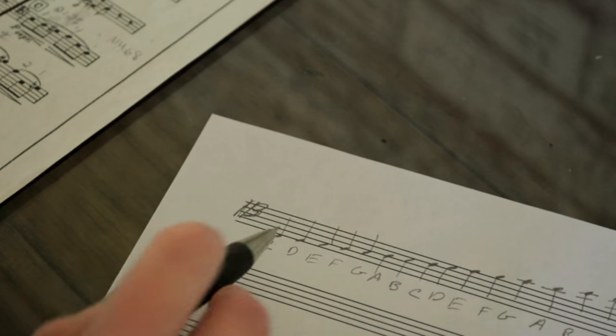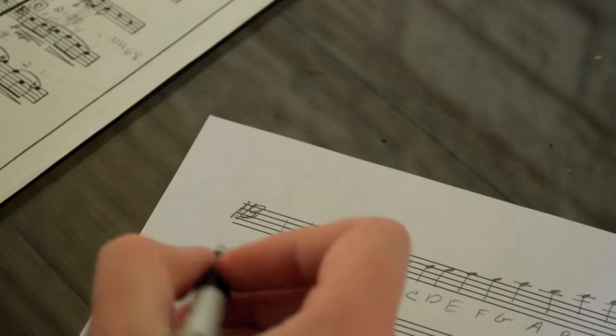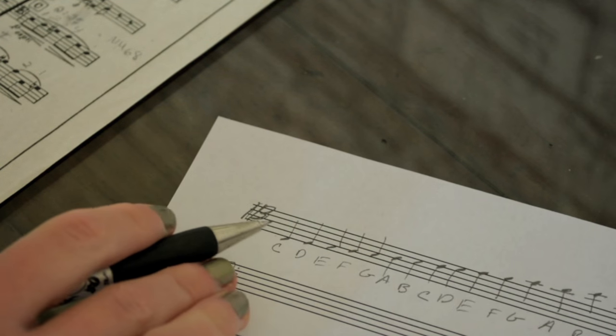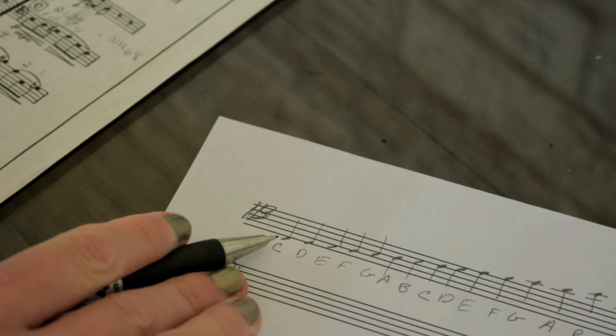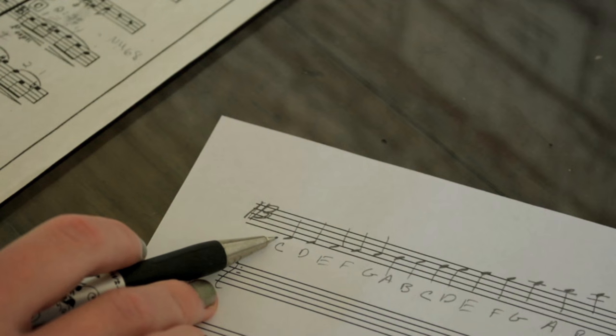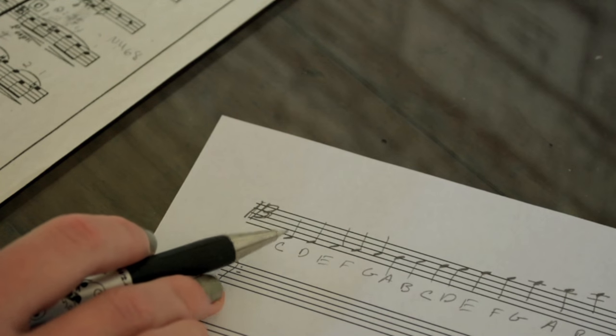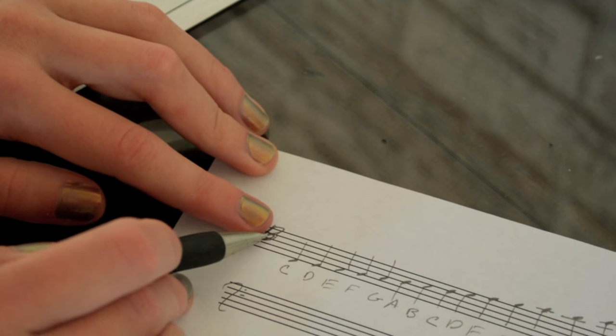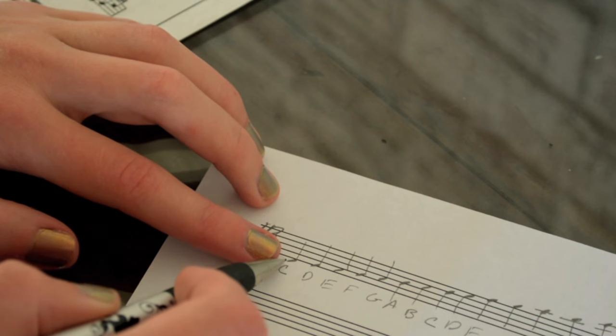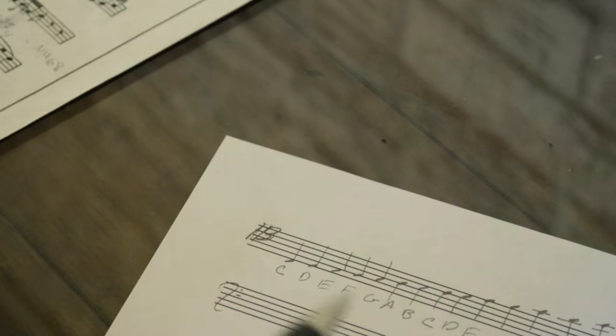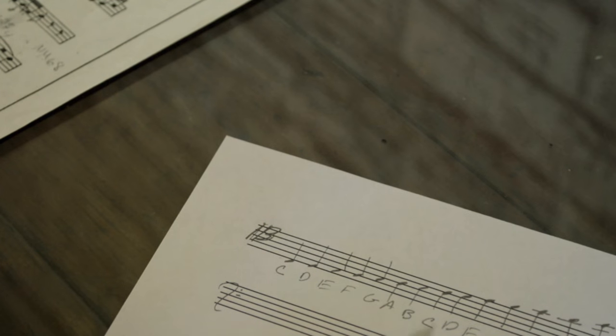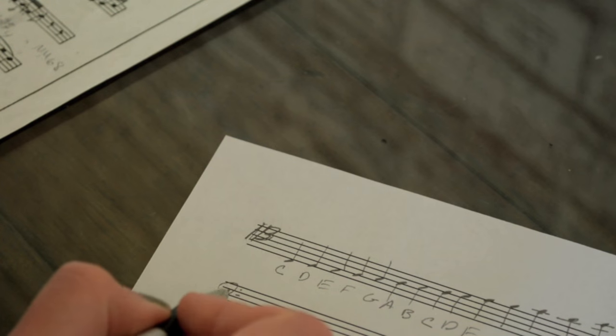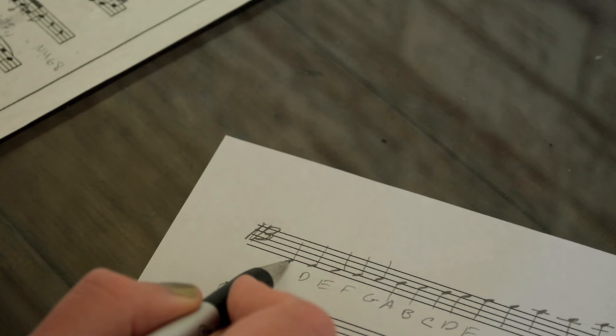On the cello, if you were going to play this, let me show you this really cool trick. All you have to do is pretend like you're reading this note in bass clef, which on the cello, this note in bass clef would be F. It would be F fourth finger on the C string.